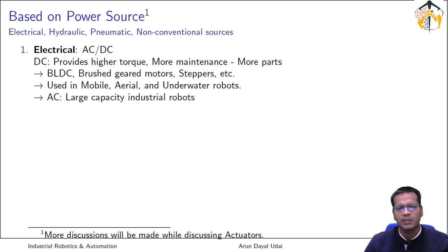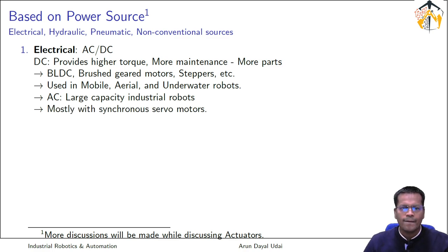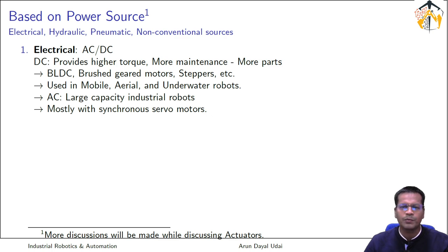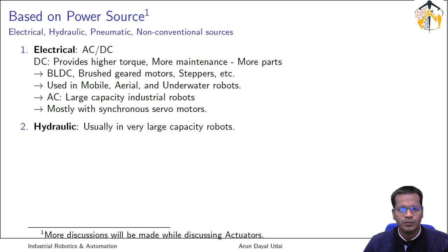Most of the actuators you will encounter in industrial robots are AC motors run by direct AC current — maybe three-phase or single-phase. Mostly these are synchronous AC servo motors. We will talk about how they work, but for now, synchronous AC servo motors are the AC motors we are referring to in industrial robot applications.